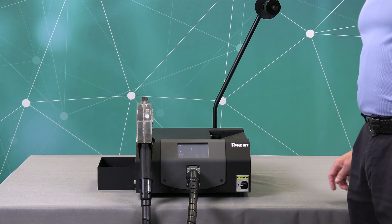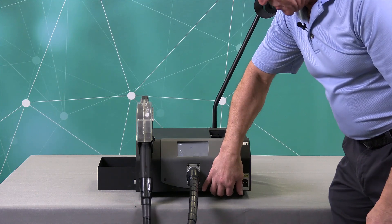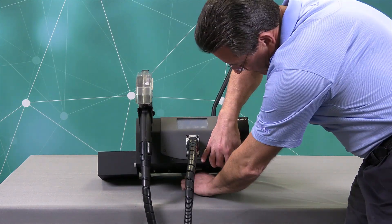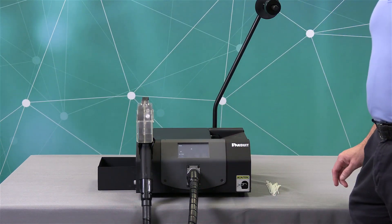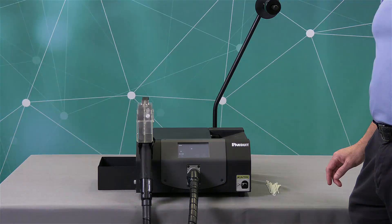After unloading the reel of cable ties, lift the dispenser unit up and clear the cable ties out underneath to prevent the cable ties from building up, which could cause a potential jam. That was the basic operation of the PAT 4.0 system.